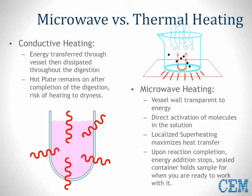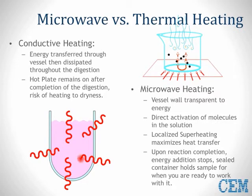Microwaves are transparent to materials such as Pyrex glass and Teflon. Therefore, the energy passes right through and into the sample. Conductive heating, by contrast, requires each surface to be heated and then transferred to the next — it is not efficient.